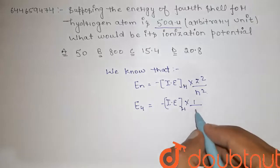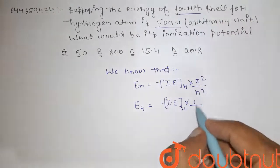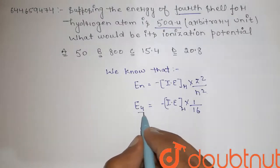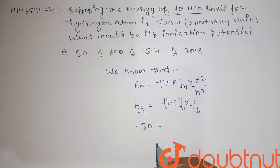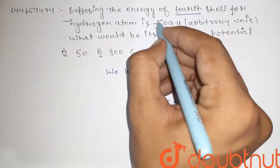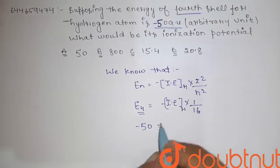That is n is four, so four square is 16. Here this energy is given as minus 50, that is equal to the hydrogen atom has the minus 50 arbitrary unit.